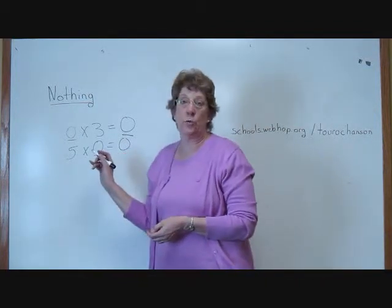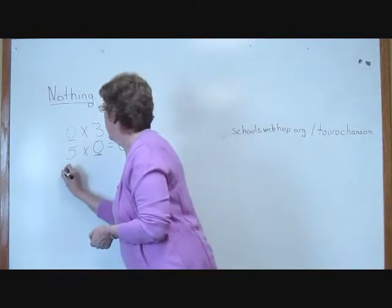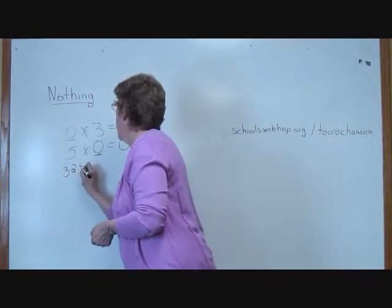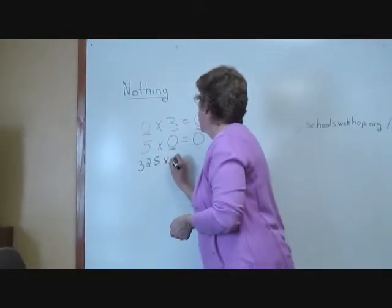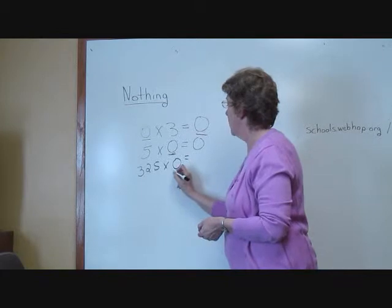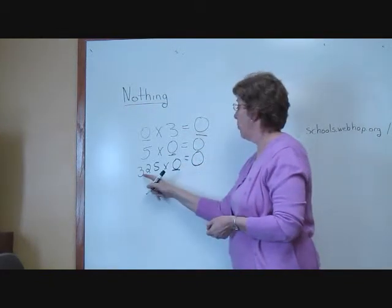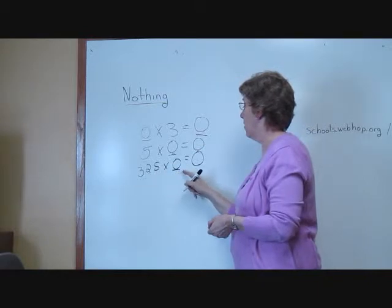And now I like to challenge the children with a really hard example. It will be three hundred and twenty-five times zero. Our rule is anything times zero is always zero, so that is zero. Three hundred and twenty-five times zero is zero.